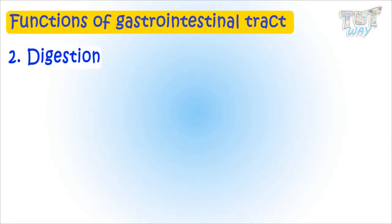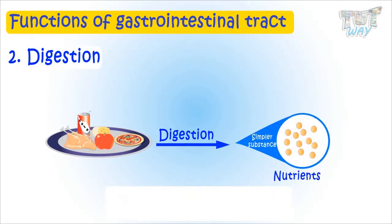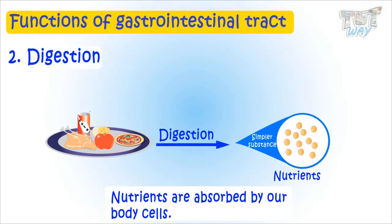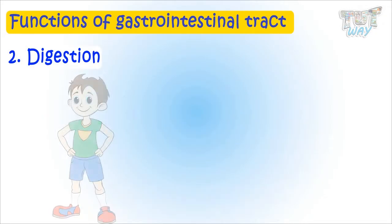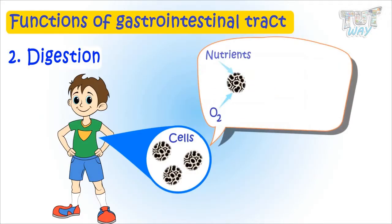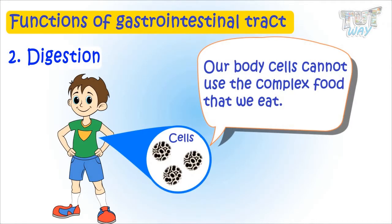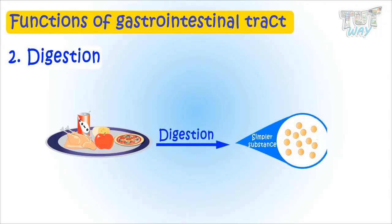Digestion is the most important function of our digestive system — the breaking down of food into simpler substances, or nutrients, that can be used or absorbed by our body cells. Our body is made up of very small cells that need nutrients for their working. They use oxygen and nutrients to produce energy and release carbon dioxide, and they cannot use the complex food that we eat.